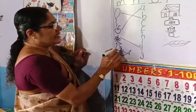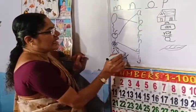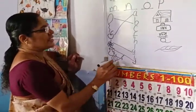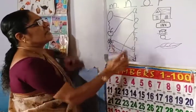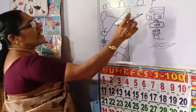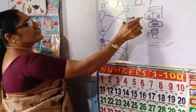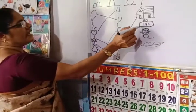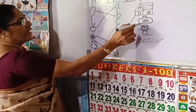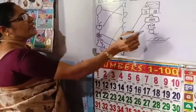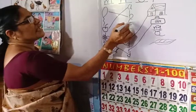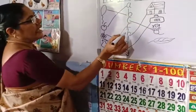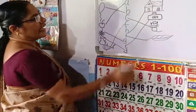What is this? J for jag. And what is this? Fish. F for fish. This is heart. H for heart. Ink. I for ink. And C for cat. L for leaf.